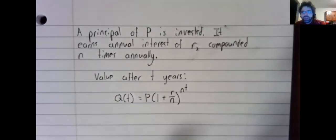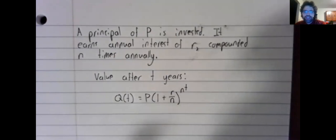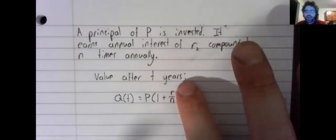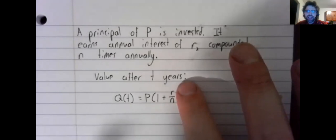So if you're earning, say, 2% interest, and that interest is compounded four times per year, you're not earning 2% interest four times per year. You're earning that 2% interest spread out over four compoundings. So that's why we divide R by N.